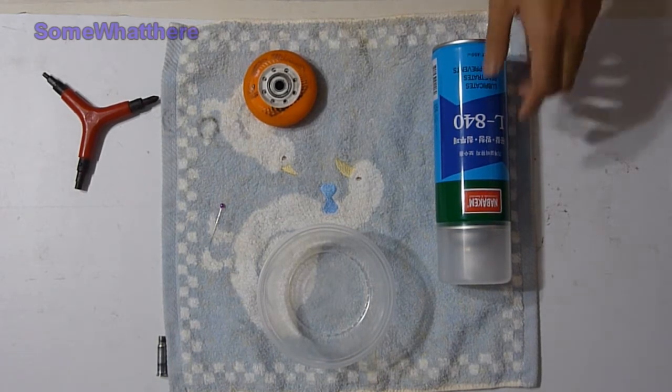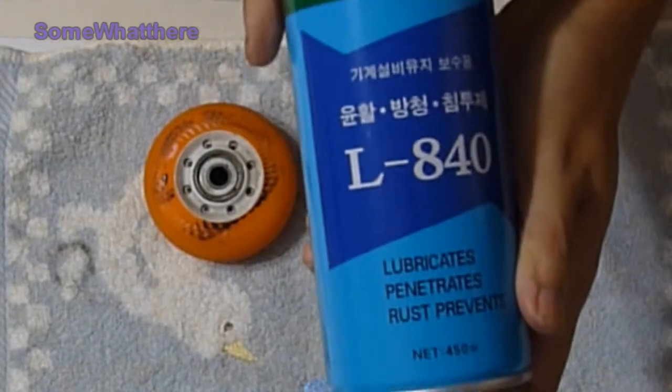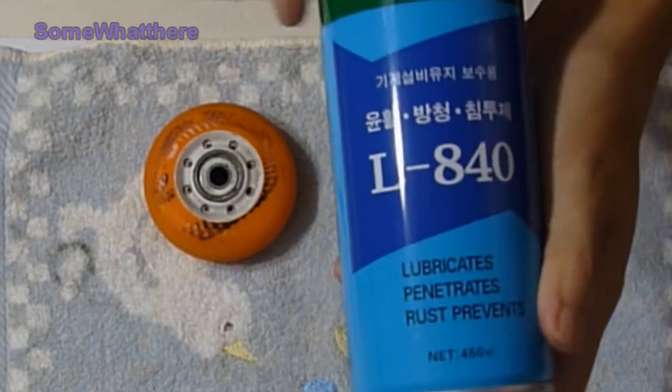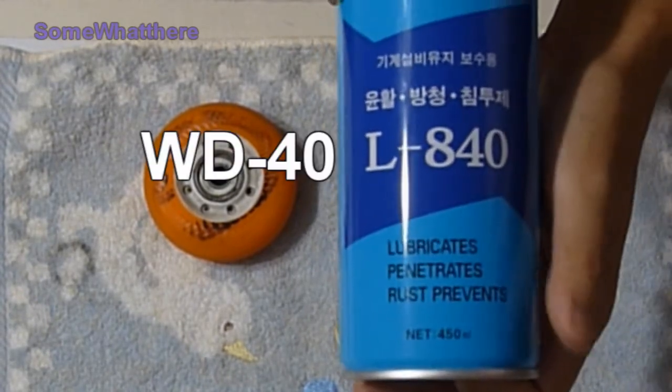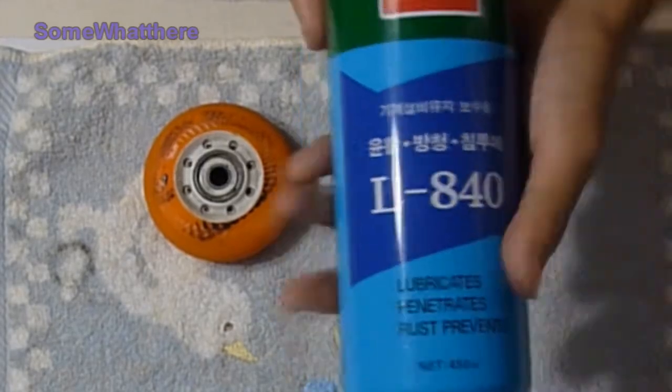So here on the table is the stuff that you need to service a bearing. First is this LA-40 from Naba Camp. You can use WD-40 as a replacement also, as long as it can lubricate and prevent rust at the same time.